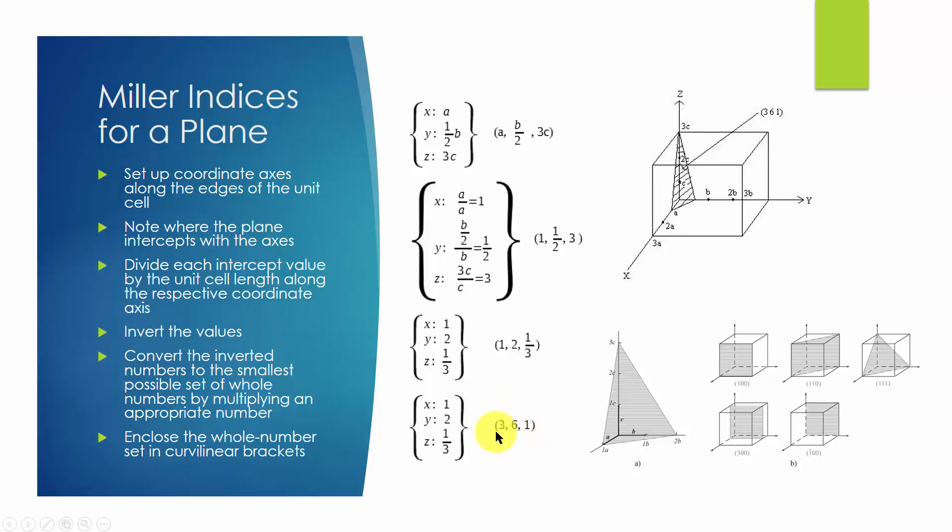Lastly, enclose this set of whole numbers inside a pair of curly brackets. So {3 6 1} is the Miller indices for this plane. This picture shows more examples of Miller indices for different planes.